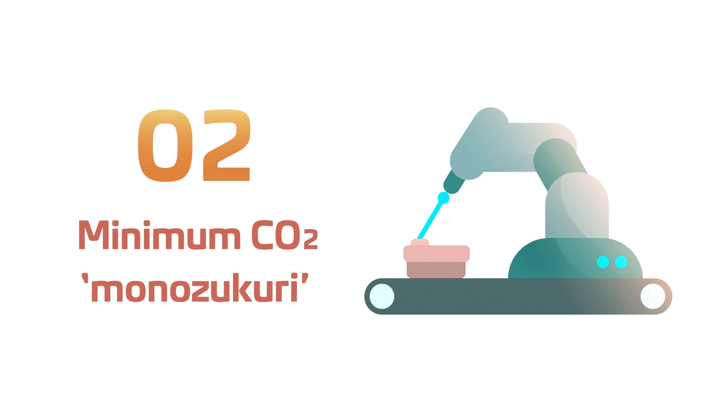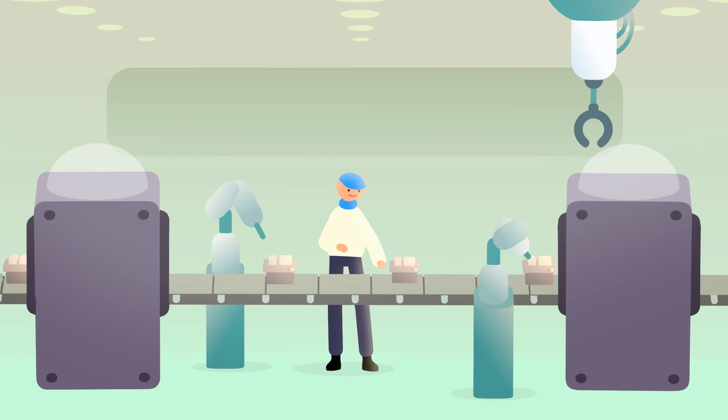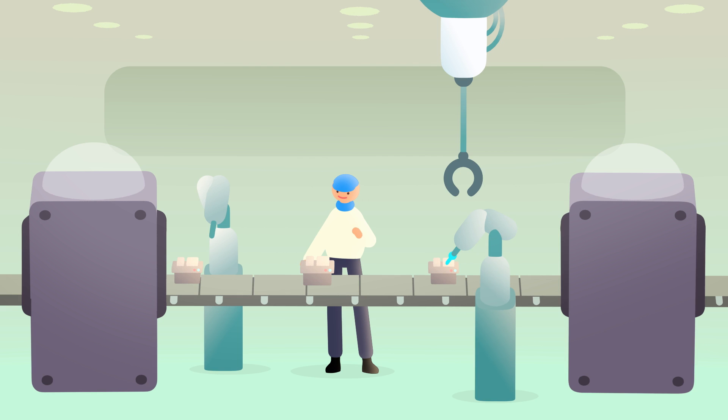2. Minimum CO2 Monozakuri. Miniaturization and other energy-saving measures will cut energy consumption in our factories and offices by one half.